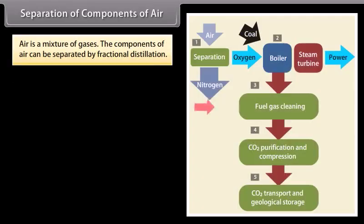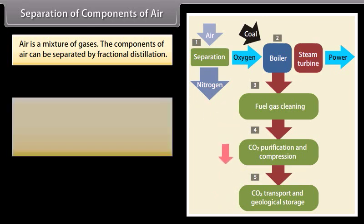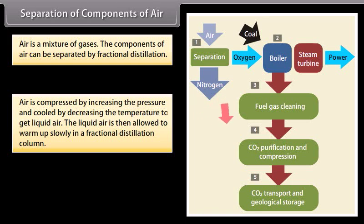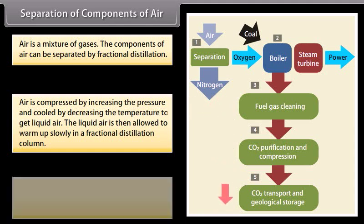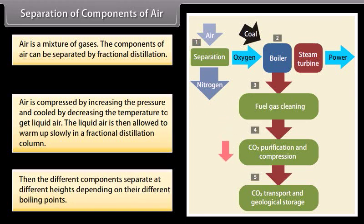Separation of components of air. Air is a mixture of gases. The components of air can be separated by fractional distillation. Air is compressed by increasing the pressure and cooled by decreasing the temperature to get liquid air. The liquid air is then allowed to warm up slowly in a fractional distillation column. Then the different components separate at different heights depending on their different boiling points.